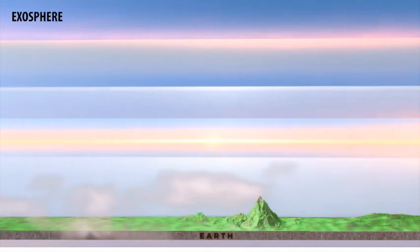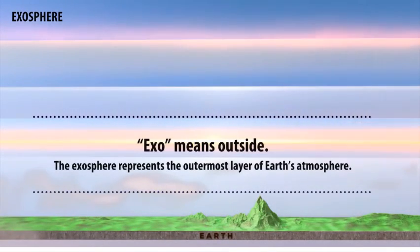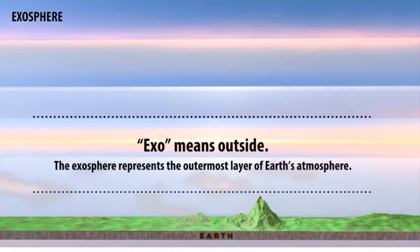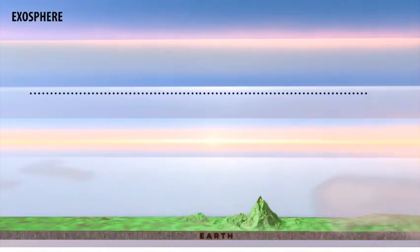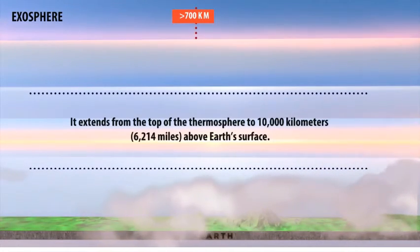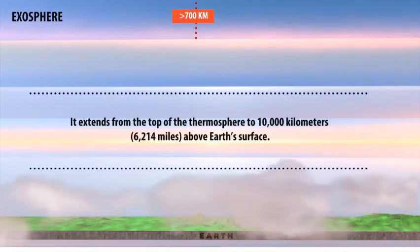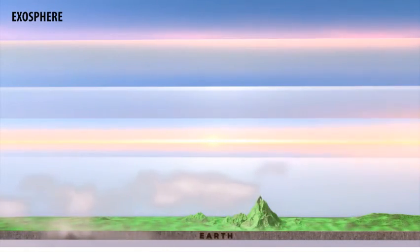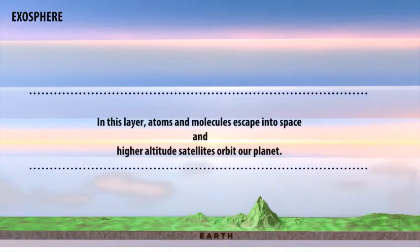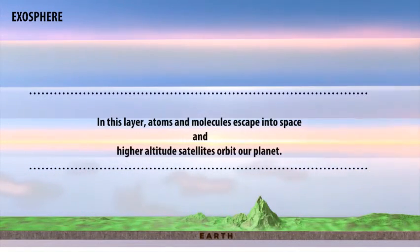Next, we have the exosphere, which is our last layer. Exo means outside. The exosphere represents the outermost layer of our Earth's atmosphere. It extends from the top of the thermosphere to 10,000 kilometers (6,214 miles) above Earth's surface. In this layer, atoms and molecules escape into space, and the highest-altitude satellites orbit our planet.